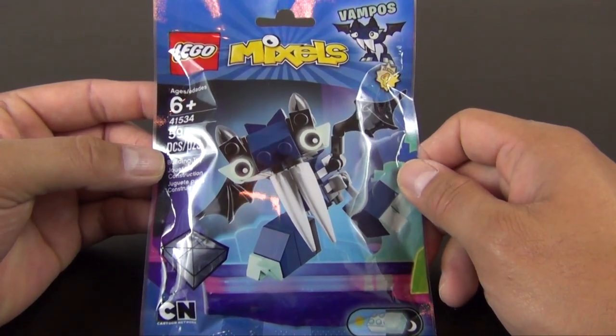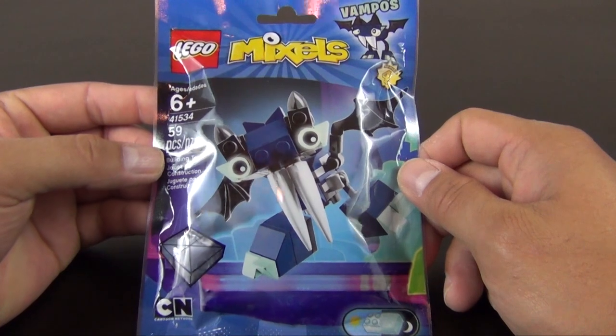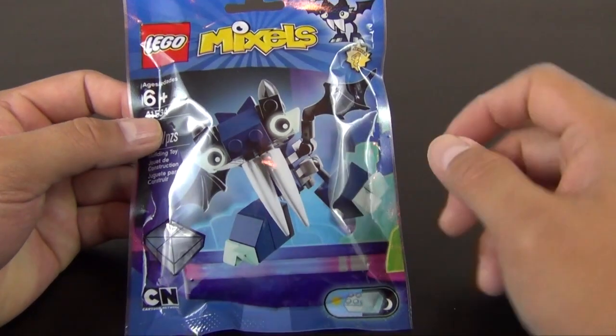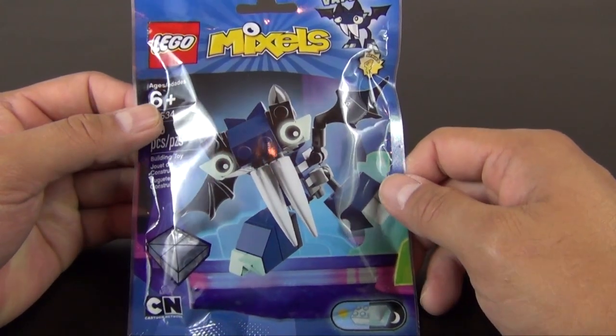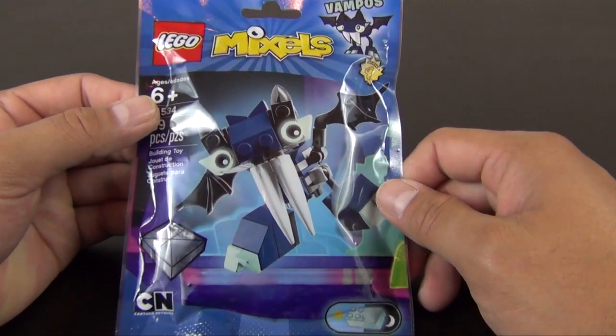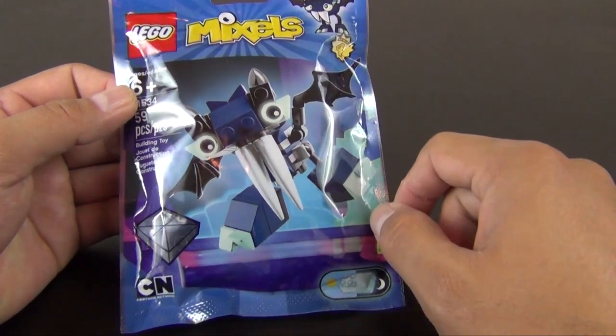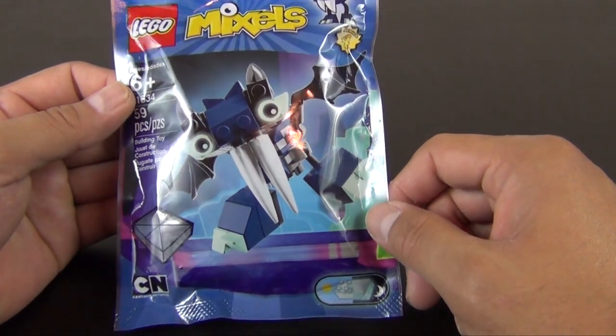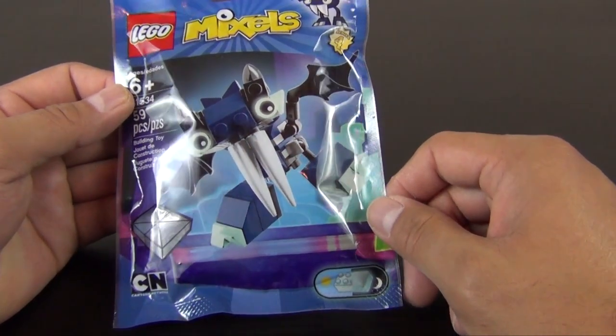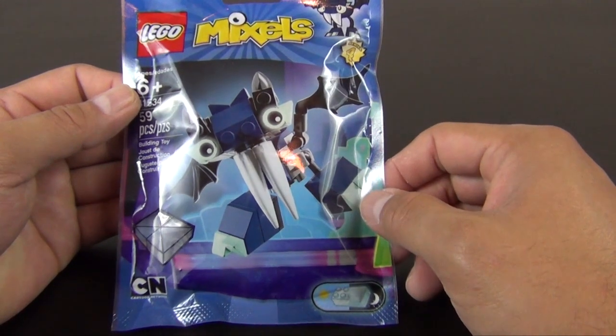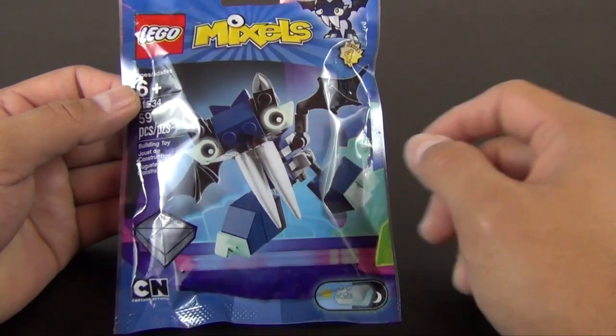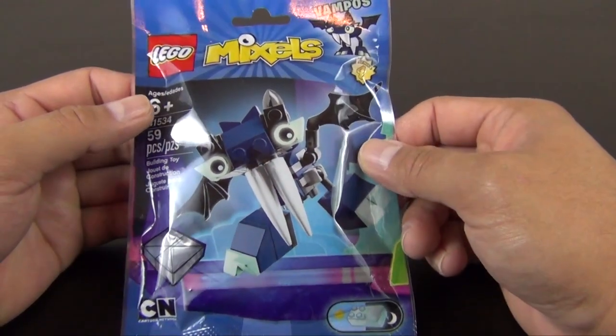This is set number 41534, 59 pieces, and this is the second figure from the Glockys tribe that we're building. Vampos is pretty cool. He's got these giant vampire-looking fangs, and then he also has the wings and some glow-in-the-dark elements just like Glowbird did.